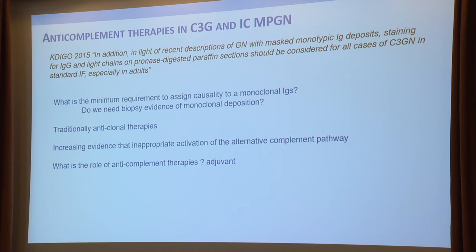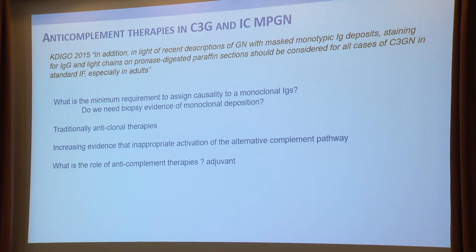The other thing we probably didn't address well in 2015 was monoclonal deposits. We said we should look for them but didn't say what to do about them. If you find a serum-free light chain or monoclonal band — which become more common with age — how do you persuade your haematologist to treat with anti-clonal therapy? What's the minimum we need? Sometimes you find a monoclonal band, see C3G, and cannot detect it in the kidney. And in these cases, should we be adding complement inhibitors to the treatment pathway while anti-clonal therapies work?